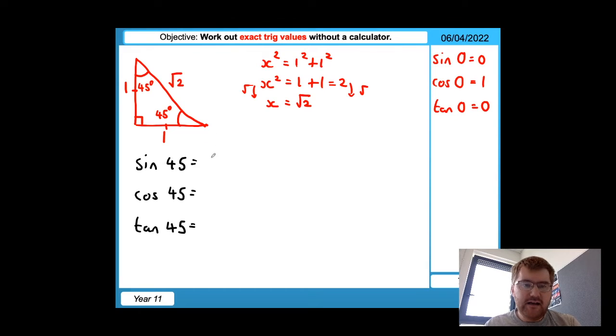Just by using my normal SOH CAH TOA. So remember, sine 45 is equal to opposite over hypotenuse, cosine is equal to adjacent over hypotenuse, and then tangent is equal to opposite over adjacent. So what I'm going to do is label my triangle. Let's just take this angle down the bottom here. So this will be O, the opposite, this is A, and then this could be my hypotenuse H. And now I substitute in to my normal SOH CAH TOA. So opposite is equal to one, hypotenuse is equal to root two. So sine 45 is equal to one over root two.